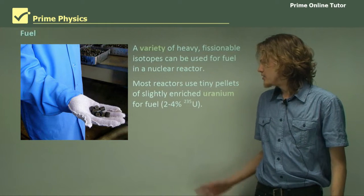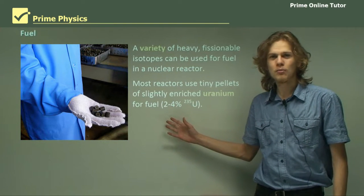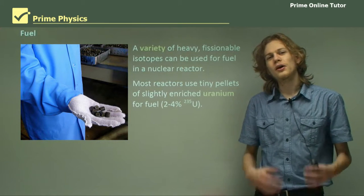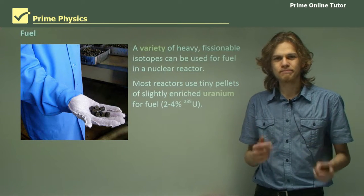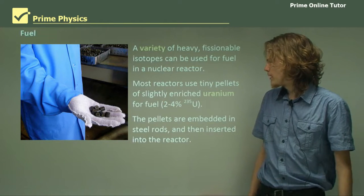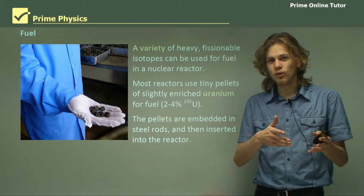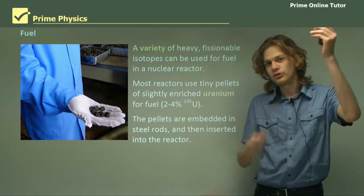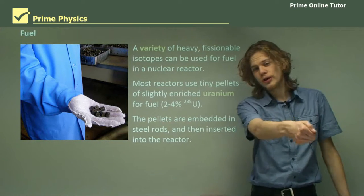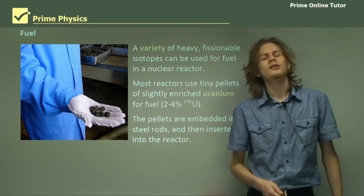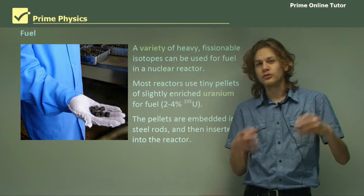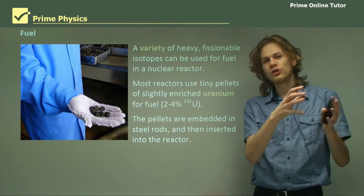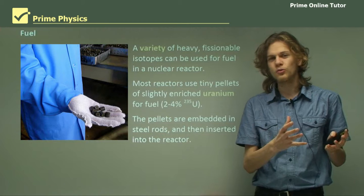There's not an extremely high proportion of uranium-235, but it's higher than what's found in nature. The pellets are embedded inside steel rods. You get these little pellets in these long steel rods, and the steel rods are poked into the reactor. Once all the uranium pellets are inside, there'll be enough critical mass for nuclear fission to occur.